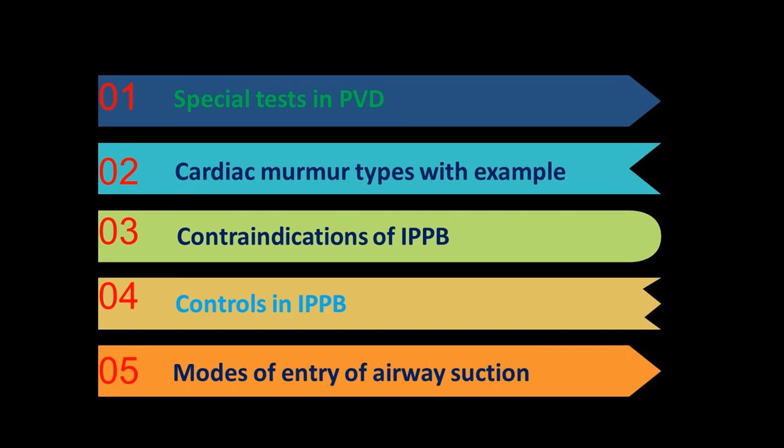The first five mnemonics I will be discussing: the first one is special tests in PVD, second one cardiac murmur types with examples, third one contraindications of IPPB (intermittent positive pressure breathing), fourth controls in IPPB, and fifth one modes of entry of airway suction.